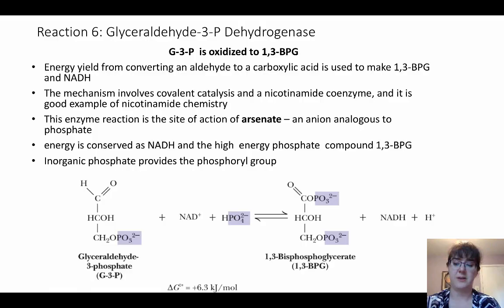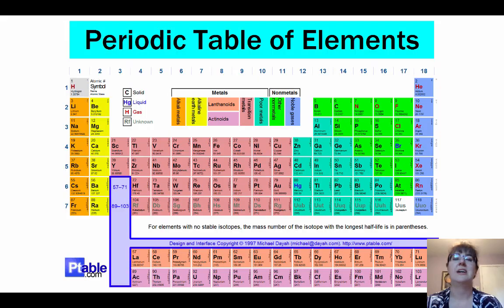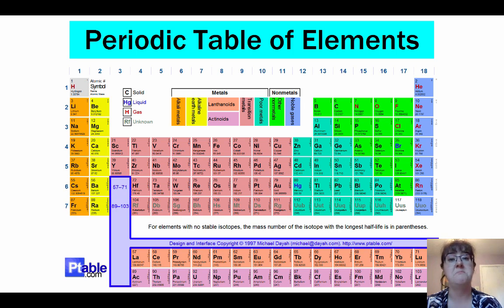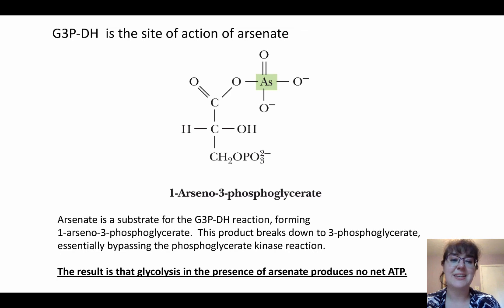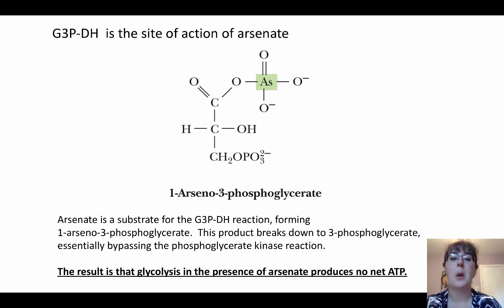The phosphate group comes from inorganic phosphate. Arsenic is located right below phosphorus on the periodic table, which lets arsenate mimic phosphate in this enzyme. If arsenate is present, it can actually be a substrate for this dehydrogenase reaction, producing 1-arseno-3-phosphoglycerate. This continues and breaks down into 3-phosphoglycerate, so glycolysis can continue, but arsenate essentially robs glycolysis of ATP production.